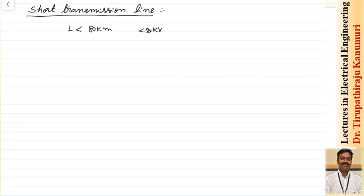As the length is less, the variation of the voltage with respect to distance is small. We have seen in the last class that the wavelength lambda is equal to 6000 kilometers — meaning after every 6000 kilometers the waveform will repeat as you go with respect to distance.